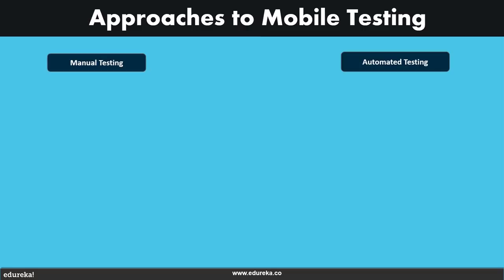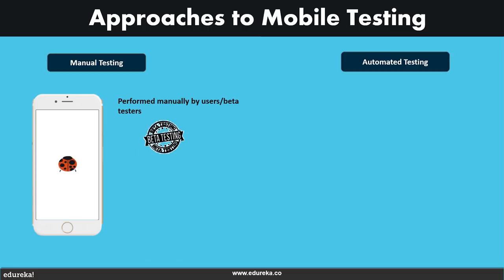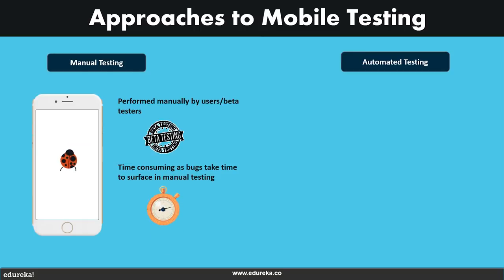There are two different approaches for testing mobile applications on the basis of how they are performed: namely manual testing and automated testing. Manual testing, as the name clearly suggests, is a human process majorly focused on user experience analysis. Evaluation of the application's functionality, security, and usability are done through the medium of a user in an explorative process. This ensures that your application lives up to a standard of user friendliness, and this type of testing is generally time consuming as bugs tend to take time to get recognized.